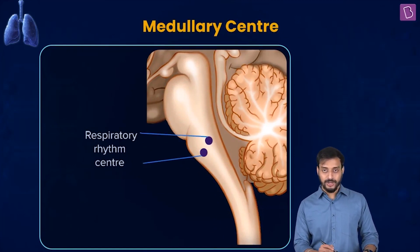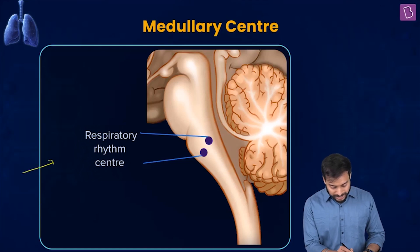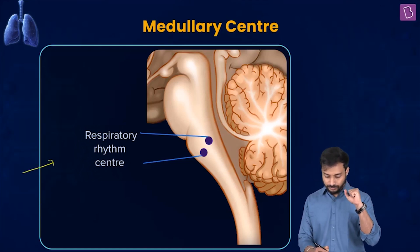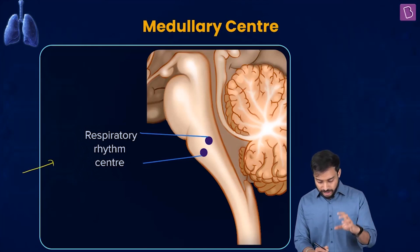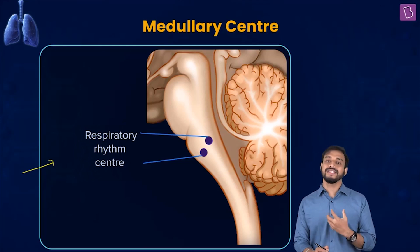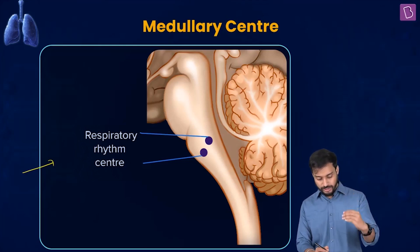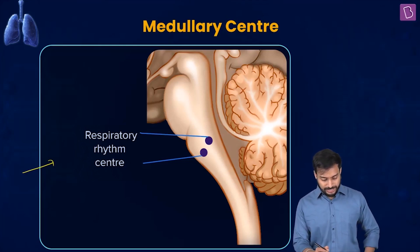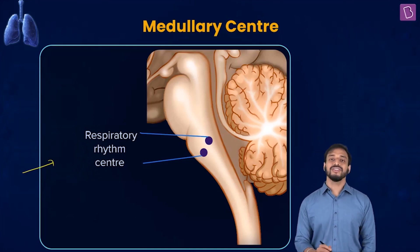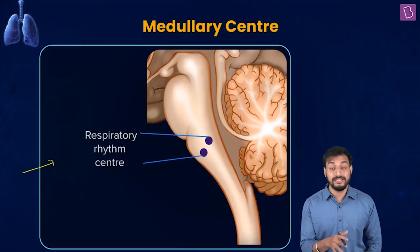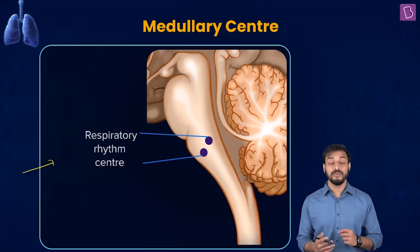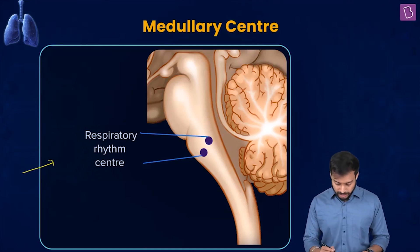The respiratory regulatory center — see the respiratory rhythm center. Do you see it properly? See the location. It's a specialized center present in the medulla region of the brain. This is primarily responsible for the regulation of respiration.